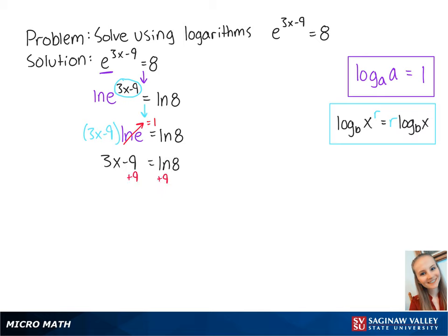If we add 9 to both sides, we get 3x equals 9 plus the ln of 8. Now we divide both sides by 3 to get x equals 9 plus the ln of 8 over 3. This is the final answer.